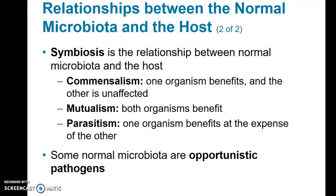Another relationship is called symbiosis, which is the relationship between the normal microbiota and the host. There are different types of symbioses: commensalism, where one organism benefits but the other is unaffected; mutualism, where both organisms benefit; and parasitism, where one organism benefits and the other is harmed.